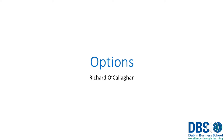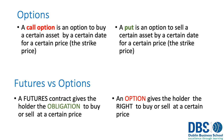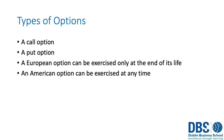Options are slightly different to forwards and futures in that they represent the option, but not the requirement, to purchase or sell an asset in the future. A call option is the option to buy a certain asset by a certain date for a certain price — the strike price. A put is the option to sell a certain asset by a certain date for a certain price — again the strike price. Unlike futures, which carry an obligation to buy or settle, an option gives you the right to buy but also the right to decide not to buy.